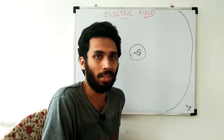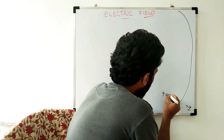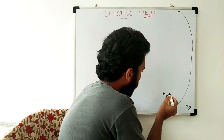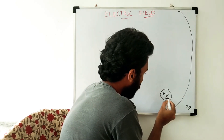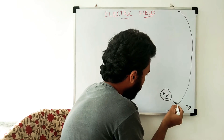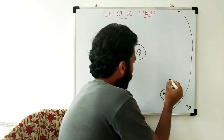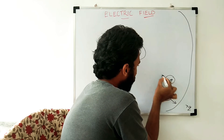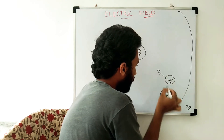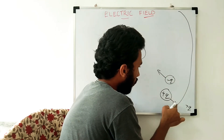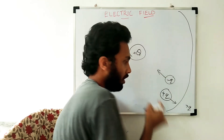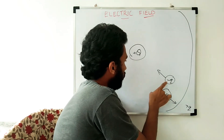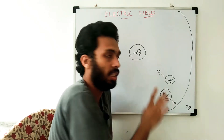I will show you a positive charge here. This positive Q will display in this direction. If you have a negative charge, that negative charge moves in the opposite direction. If you have a negative charge, it will move in this direction. This is because it is attraction.